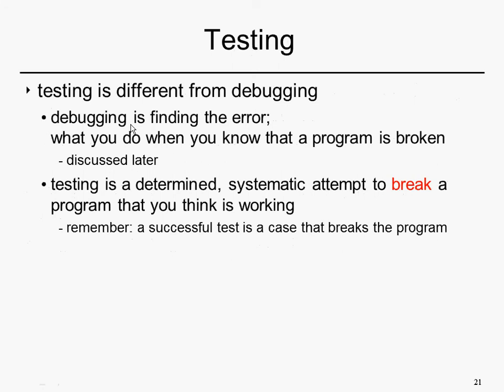Testing finds failures in a program — it identifies cases where failures occur. Debugging finds faults: the actual problems that underlie observable failures. A failure might be something like an output error, or a crash, or a disk failure, or an out-of-memory prompt, or maybe unbearable select performance. Debugging is when we want to find out what underlies that.